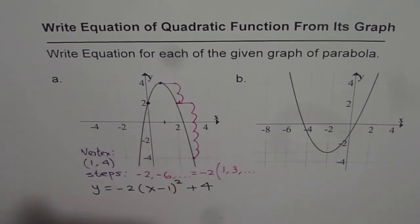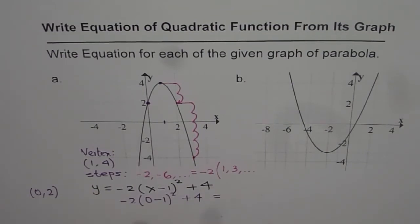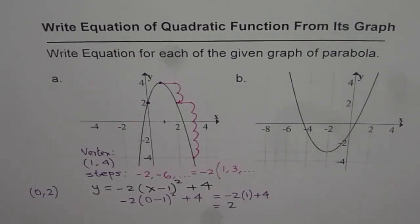So we are using the point which is (0, 2). So if I put x equals to 0, what do I get? I get minus 2 times (0 minus 1) whole square plus 4, which is equal to minus 2, this is 1 squared, so that is 1 plus 4, and that is indeed equal to minus 2 plus 4 is plus 2. So that is perfect.